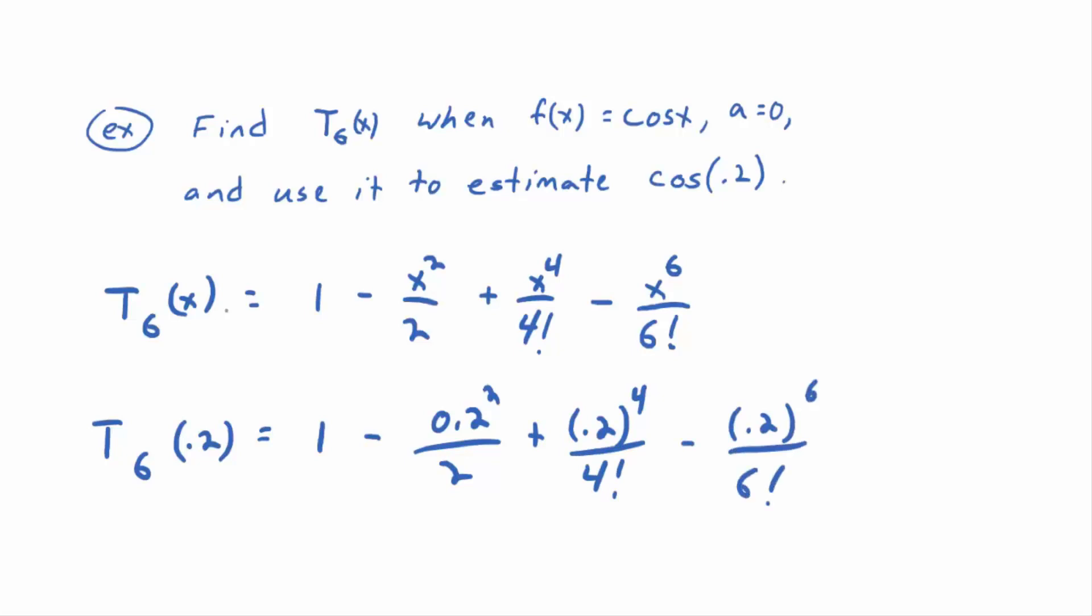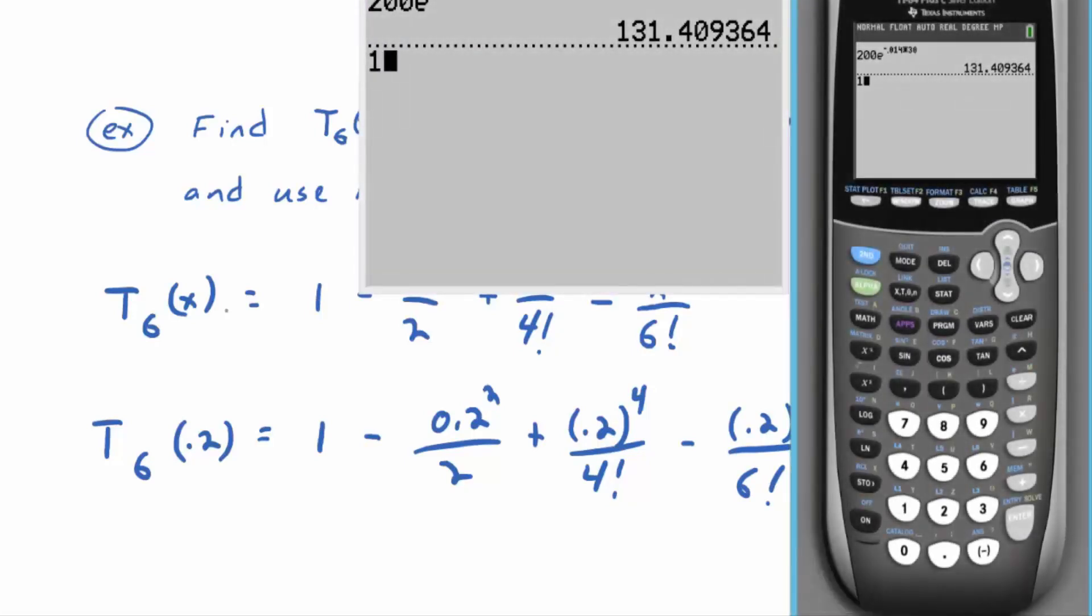Anybody have a calculator handy? Okay, one minus 0.2 squared divided by two, plus 0.2 to the fourth divided by—24 is four factorial, right? And then minus 0.2 to the sixth divided by—what is—720?